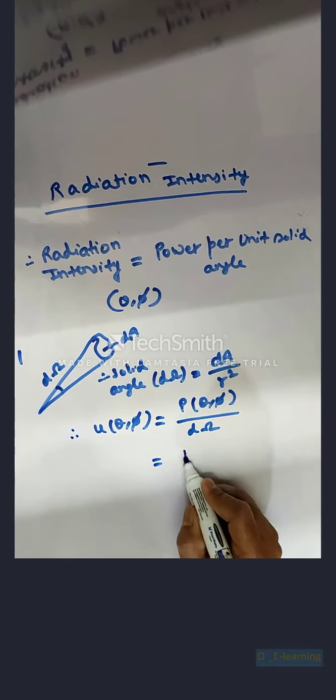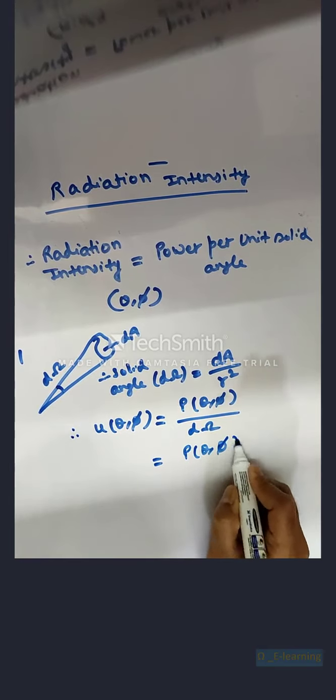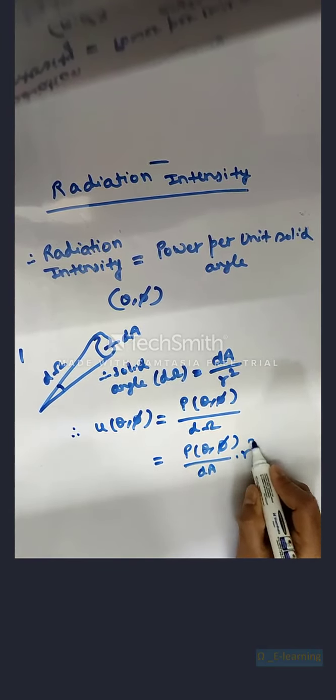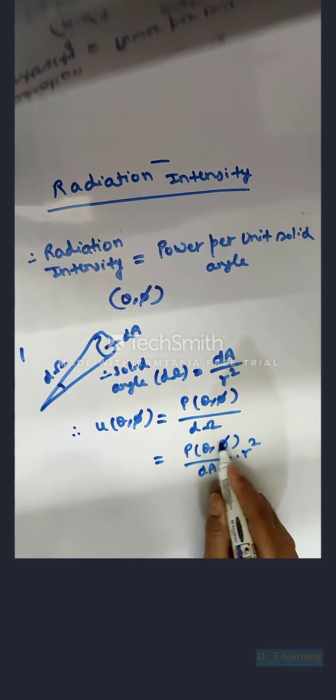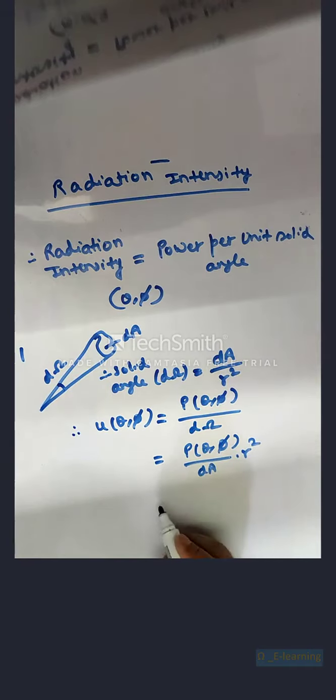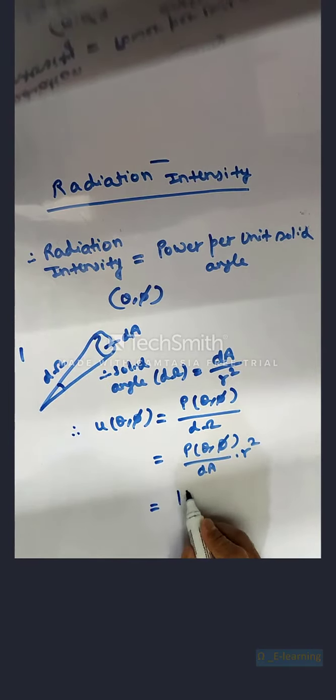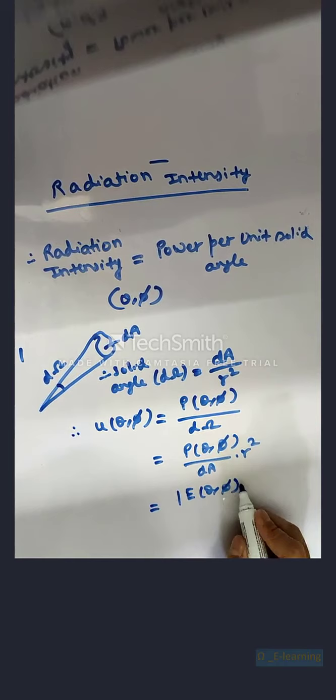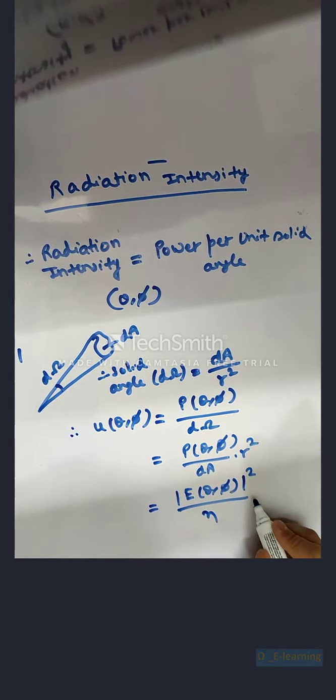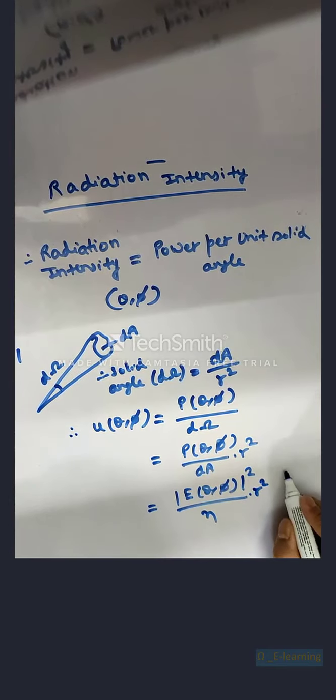So if you just put down d omega as dA by R square, then write it as p theta phi into R square. Again, this p theta phi is nothing but a Poynting vector. So if you can write it as e theta phi whole square divided by eta into R square.